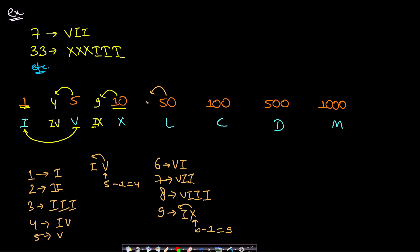Similarly, the previous number for 50 is 40. Numbers between 40 and 50 will be handled by the earlier logic. For 40, the lower tenth multiple of 50 is 10, so 40 is represented as XL.